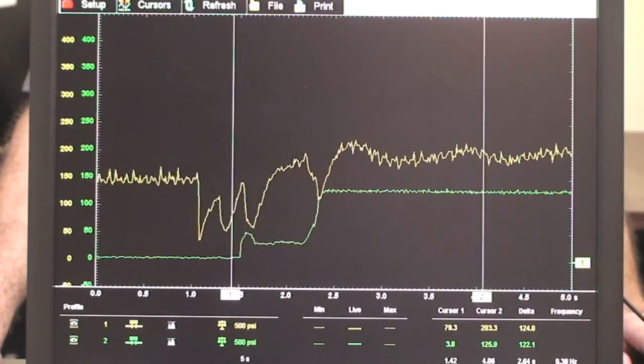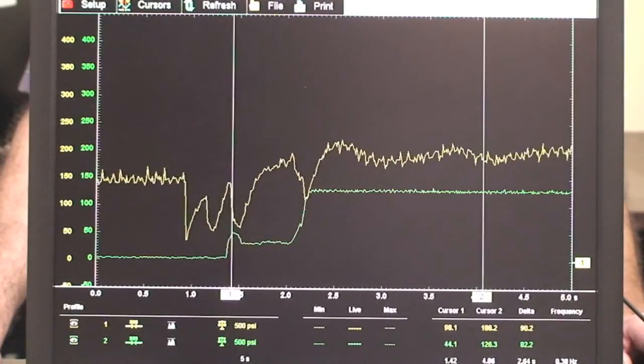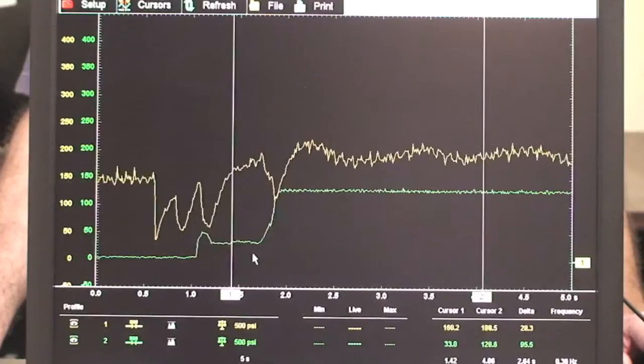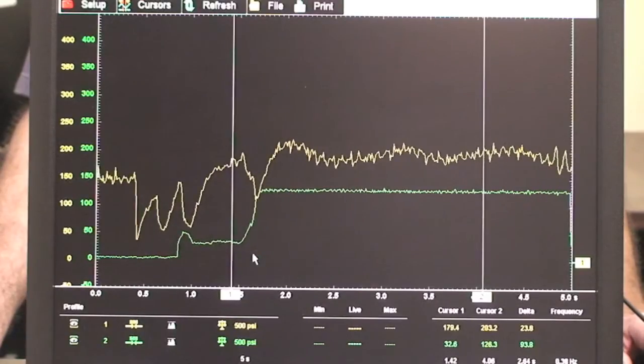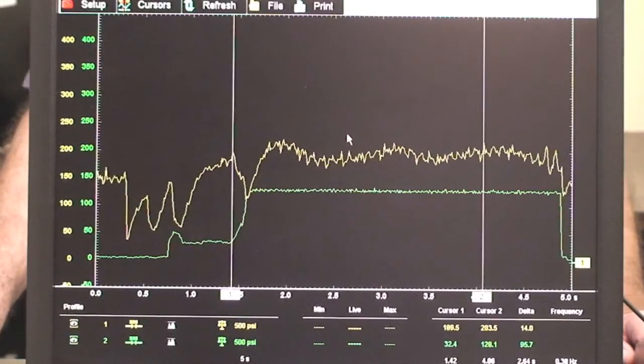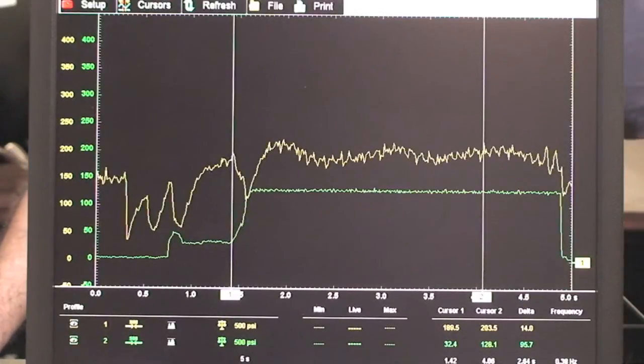Going back to the pressure transducer, this is the stage right here of the initial engagement. Your servo stage right there on cursor number one being applied, and then gradually it starts to increase the pressure to the PCC pressure right here.